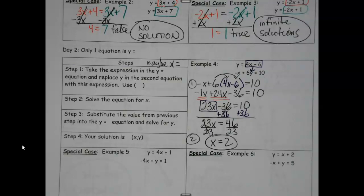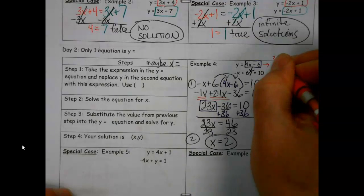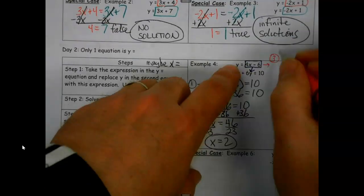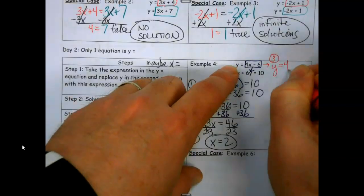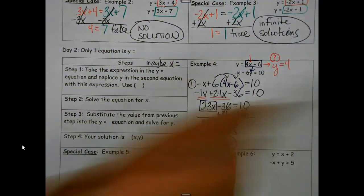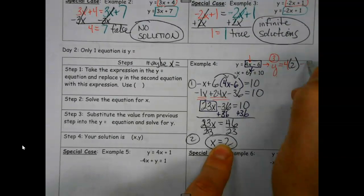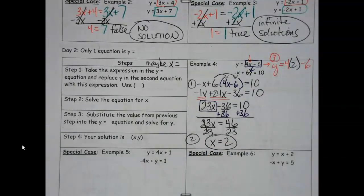Now I'm going to take this and plug it into the y equals equation. So here's my step three. y equals 4 times, I know what x is now, x is 2. So I'm just going to substitute that in. We're doing substitution again except this time we're not doing it with a whole bunch of stuff, we're just doing it with our answer that we got here.